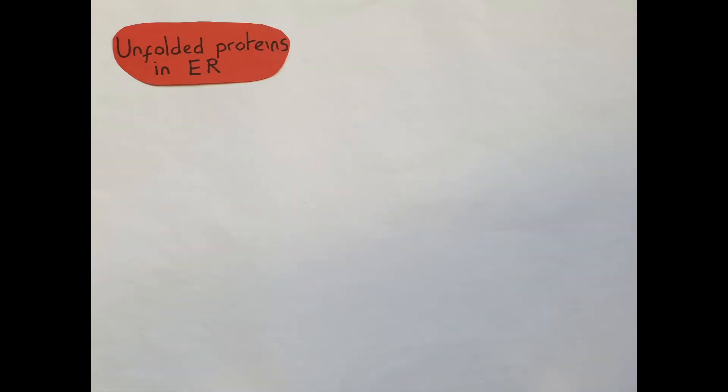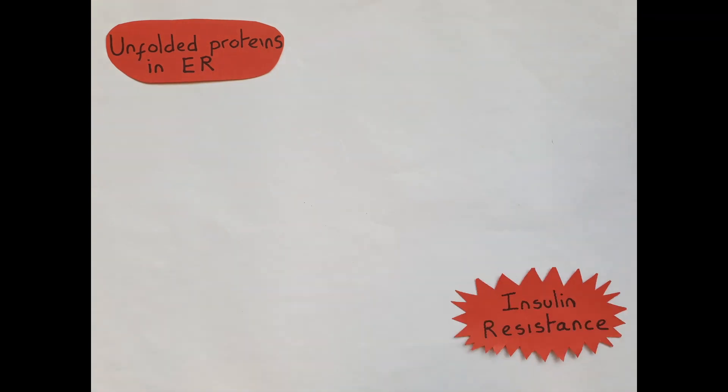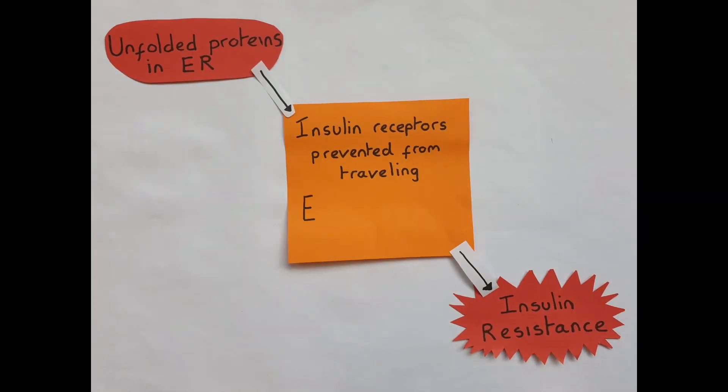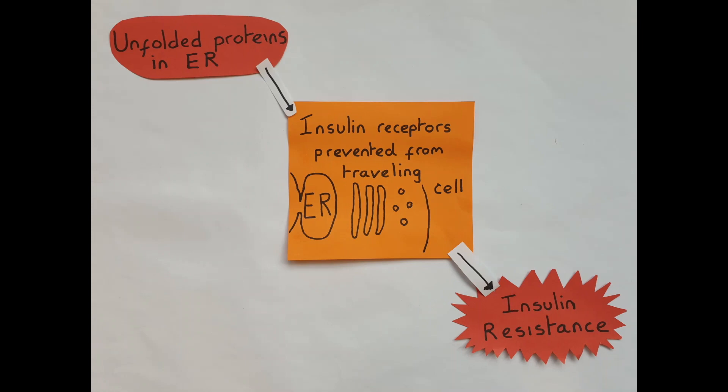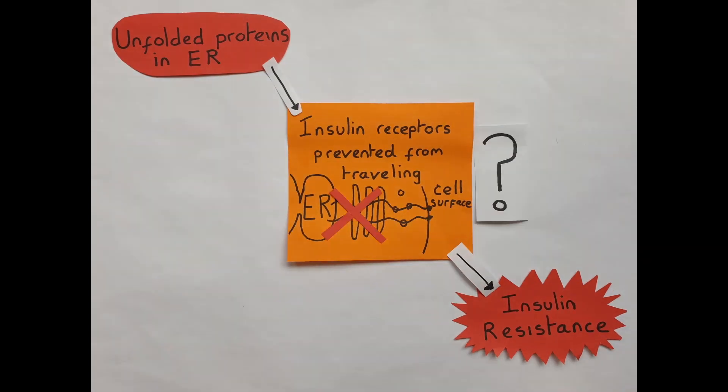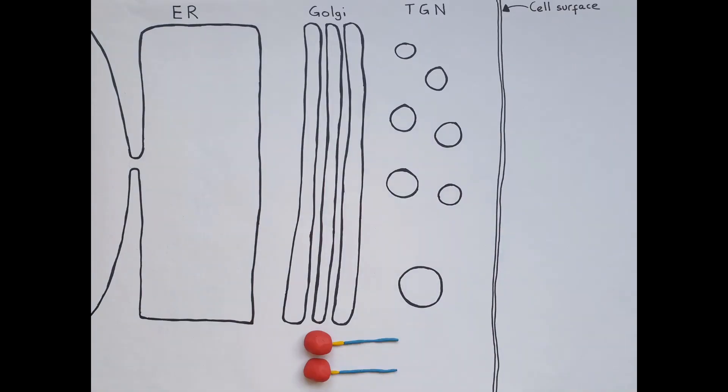Do unfolded proteins in the ER cause insulin resistance by preventing insulin receptors from traveling from the ER to the cell surface? To find out, we constructed a modified insulin receptor that is made by ribosomes in the cytosol.